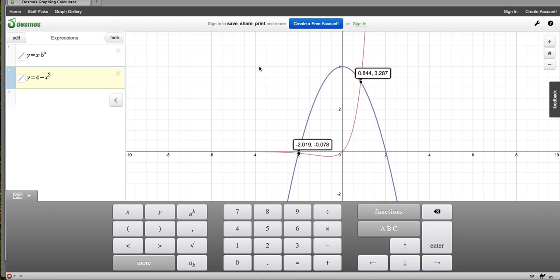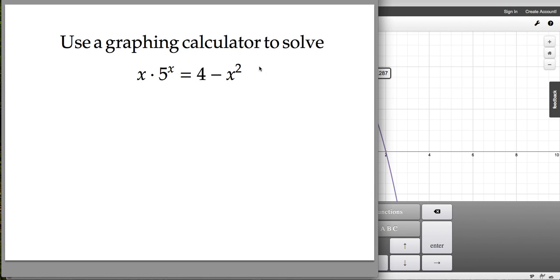So we'll come back over and just show the answers. The two solutions to this equation are x equals negative 2.019 and x equals 0.844.